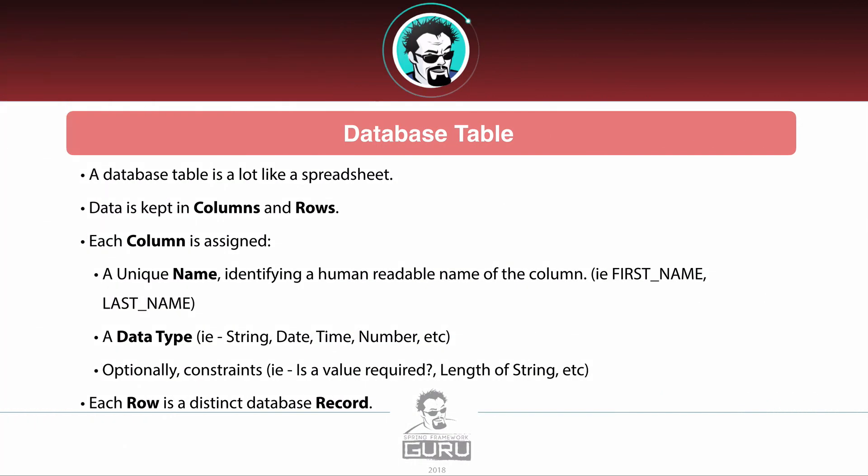I envision a database table as a lot like a spreadsheet. If you're familiar with spreadsheets, it's going to be pretty easy to start envisioning how a database table works. Your data is kept in columns and rows. Each column gets a unique name — it's important that it is unique to that table — and it should be human-readable and descriptive, like first name, last name, address, city, state. I do see some systems that use generated values.